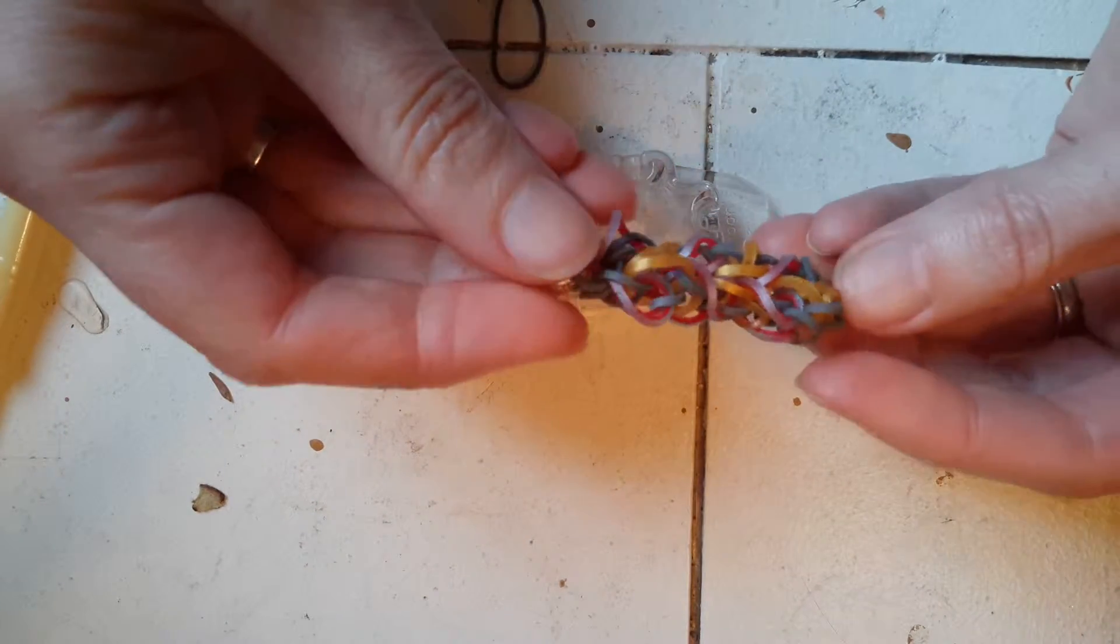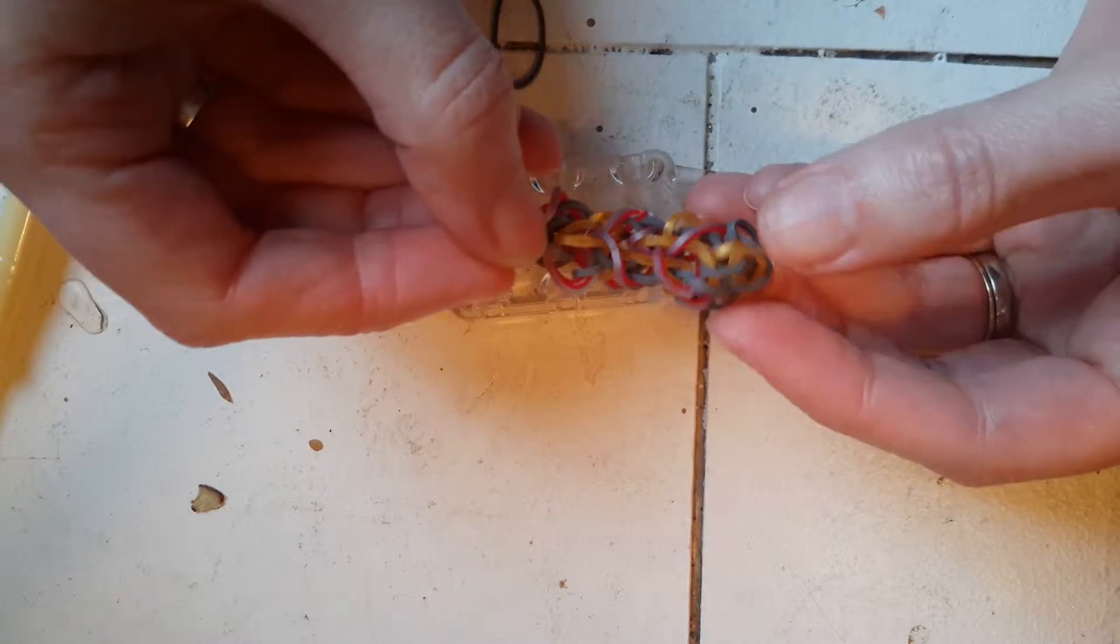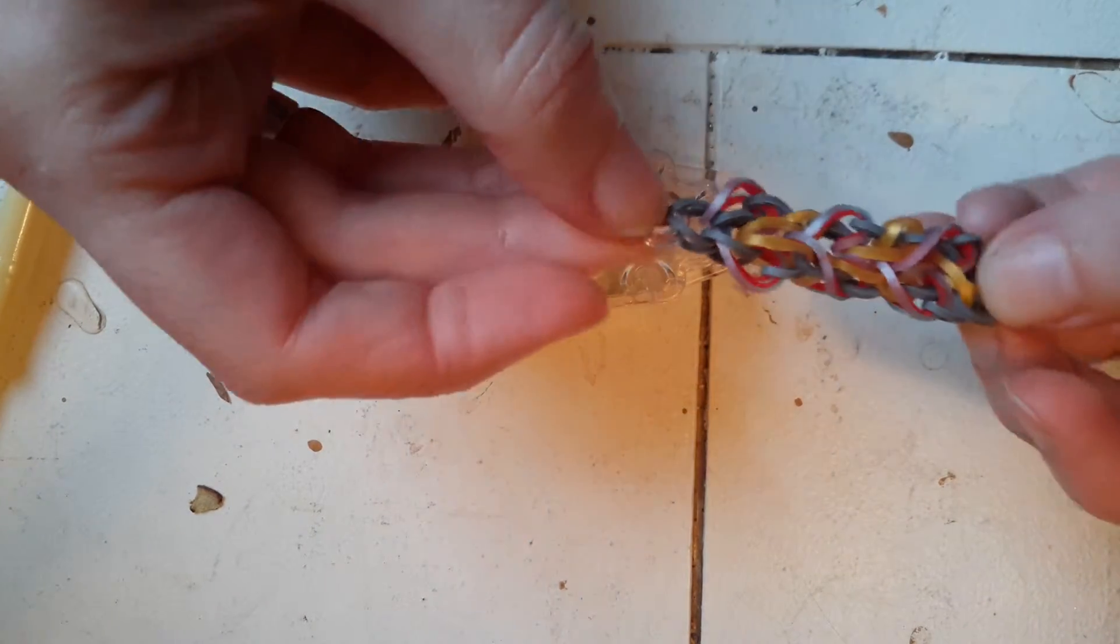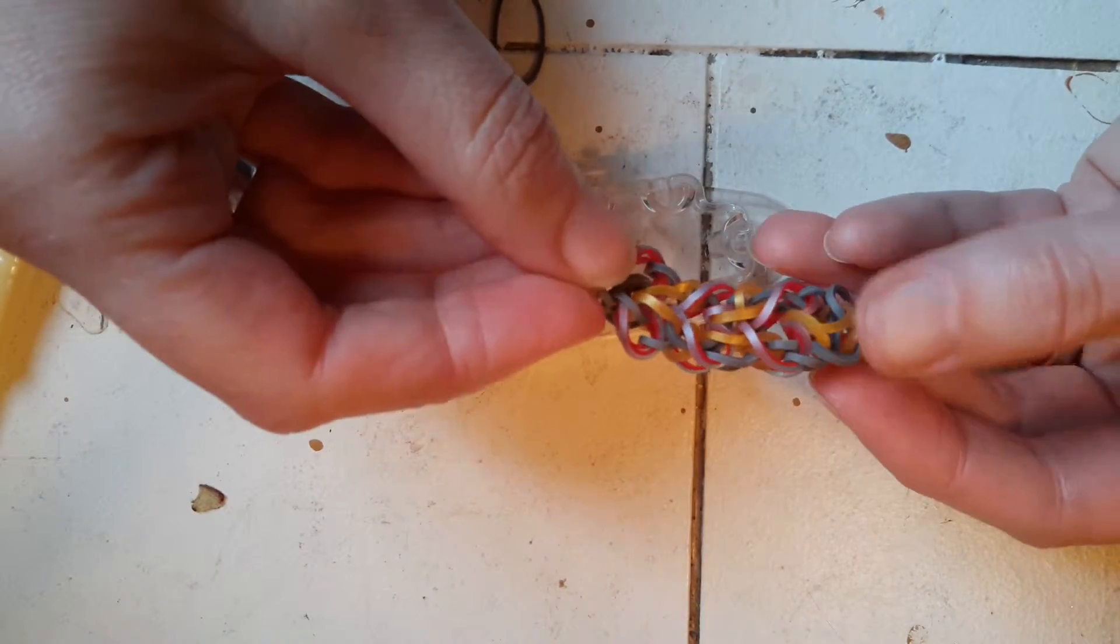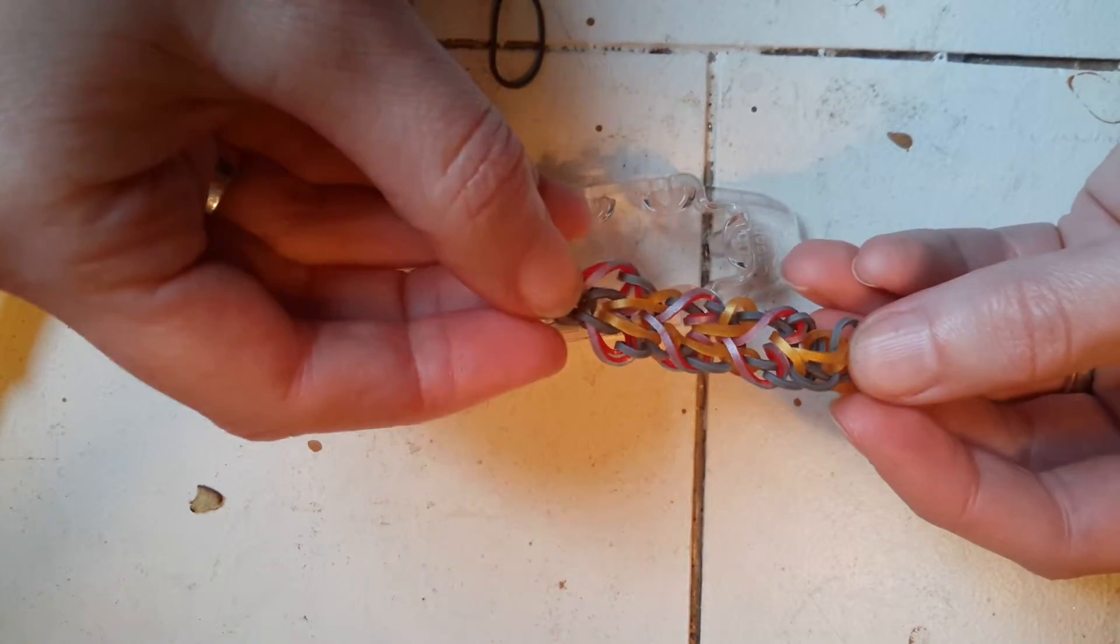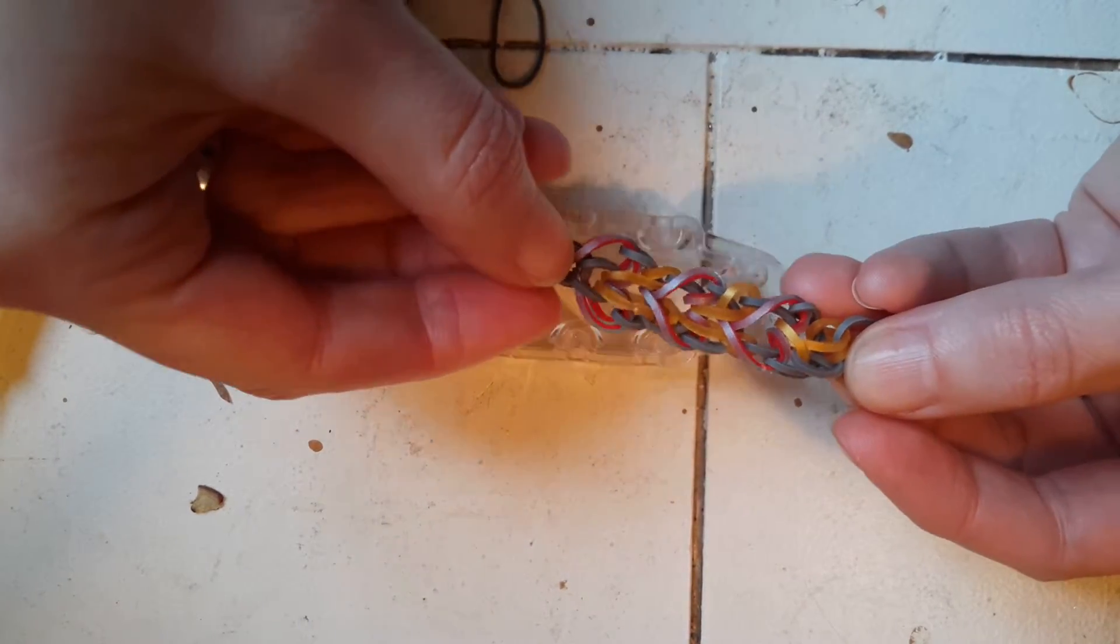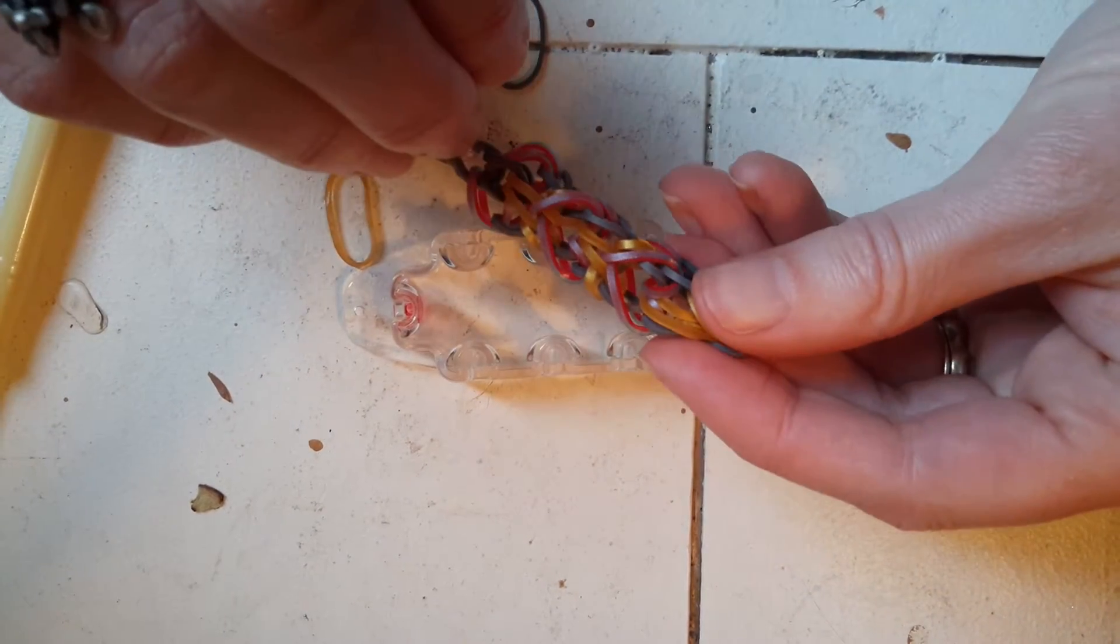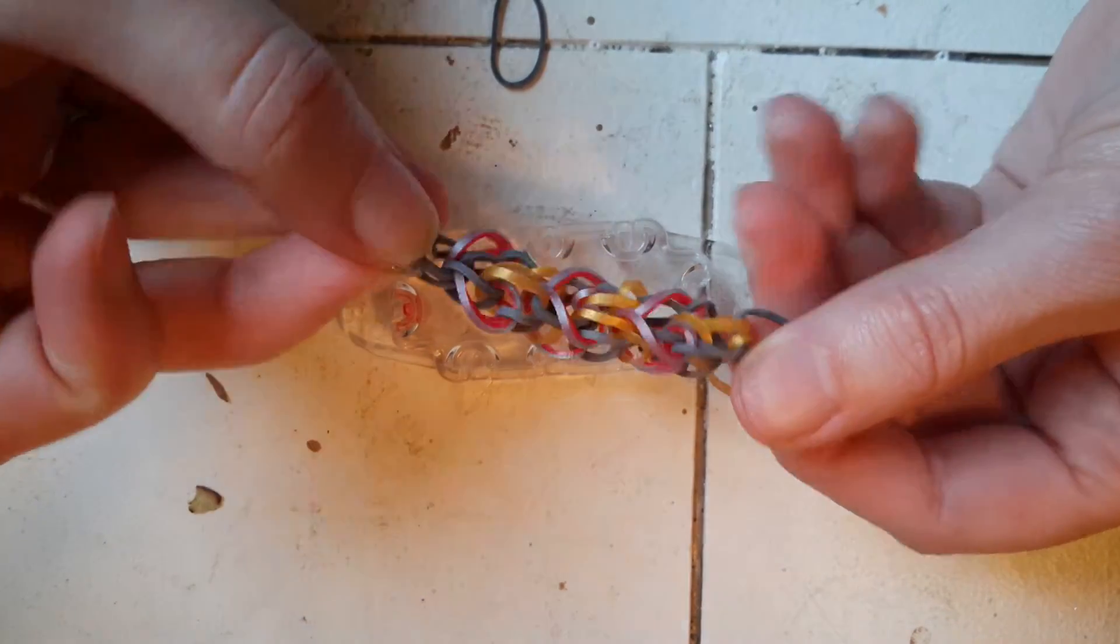And there we have it, hearts and horns. This is a reasonably easy pattern if you've done the heart link type bracelets before. I just like it because it's kind of got an open lacy look to it. And honestly, the pattern isn't too obvious that it's hearts. So when I've given away bracelets in random colors, a lot of guys pick this pattern, which kind of surprises me because I see the hearts real easy. But, you know, to each his or her own. So there you have it. Happy looming.